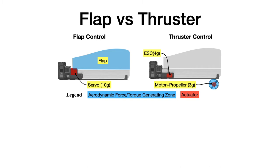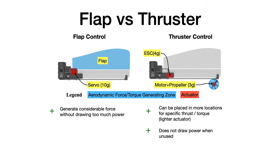Obviously, as the thruster is smaller and lighter, it can be placed at many different locations on the platform. The benefit of the flap is that it can generate a large force without drawing too much power. As for the thruster, it can be placed at any location for a specific application of force. Also, it does not draw any power when it is not used.